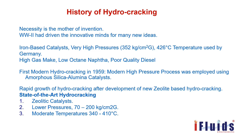Before secondary process units like the hydrocracker were developed, crude distillation could convert only around 45 to 50 percent of the crude stock into usable products, with the remaining reduced crude considered waste. When vacuum distillation was invented, the remaining 50 to 55 percent of reduced crude was further processed to produce value-added products, increasing the overall yield percentage.